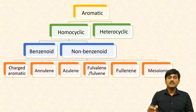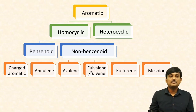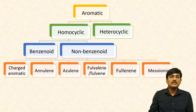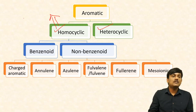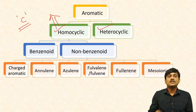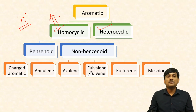Aromatic compounds are classified into homocyclic aromatic compounds and heterocyclic aromatic compounds. In case of homocyclic aromatic compounds, all the ring atoms are carbons.